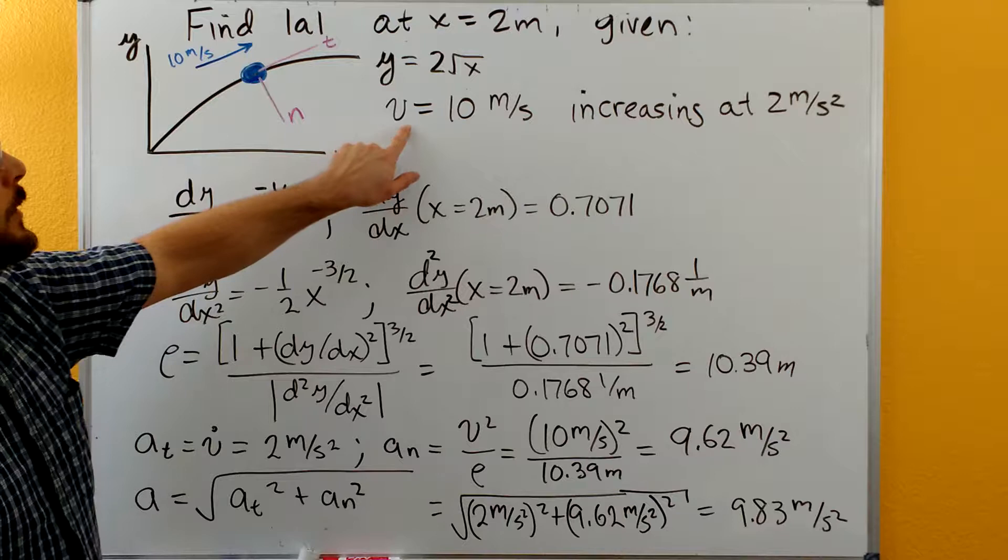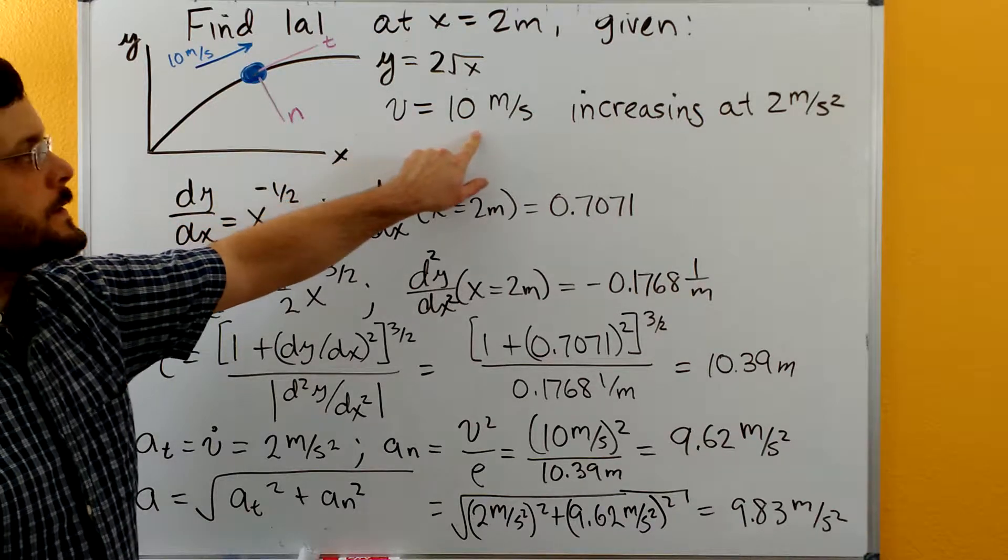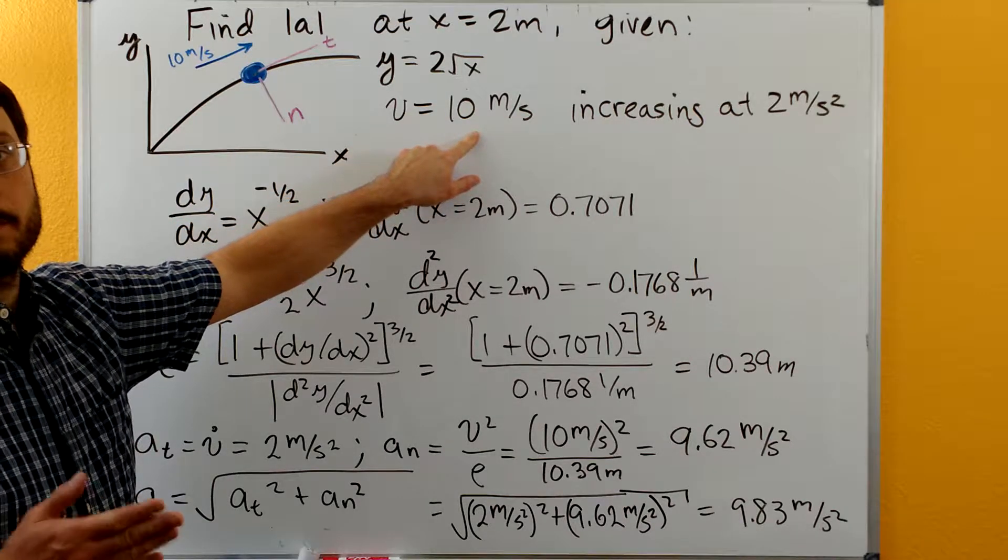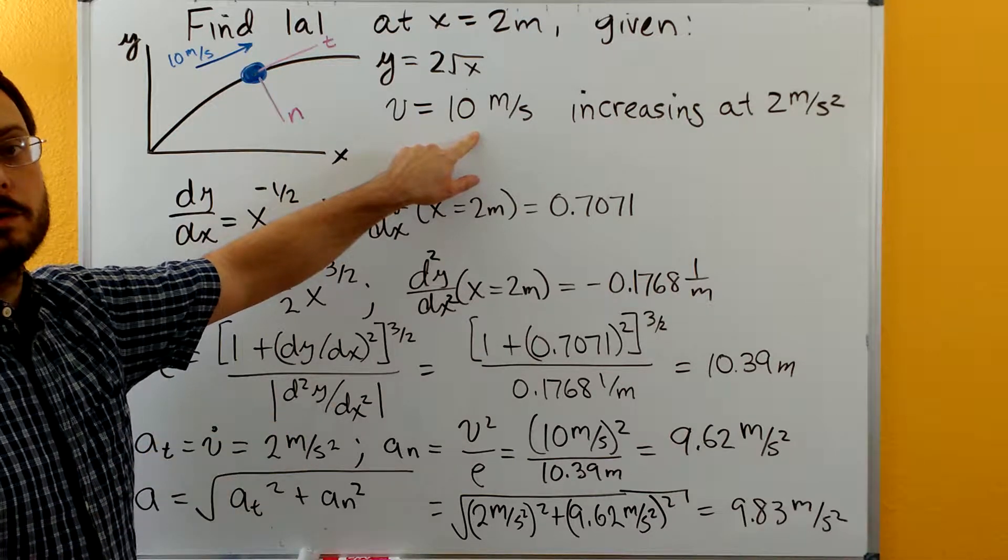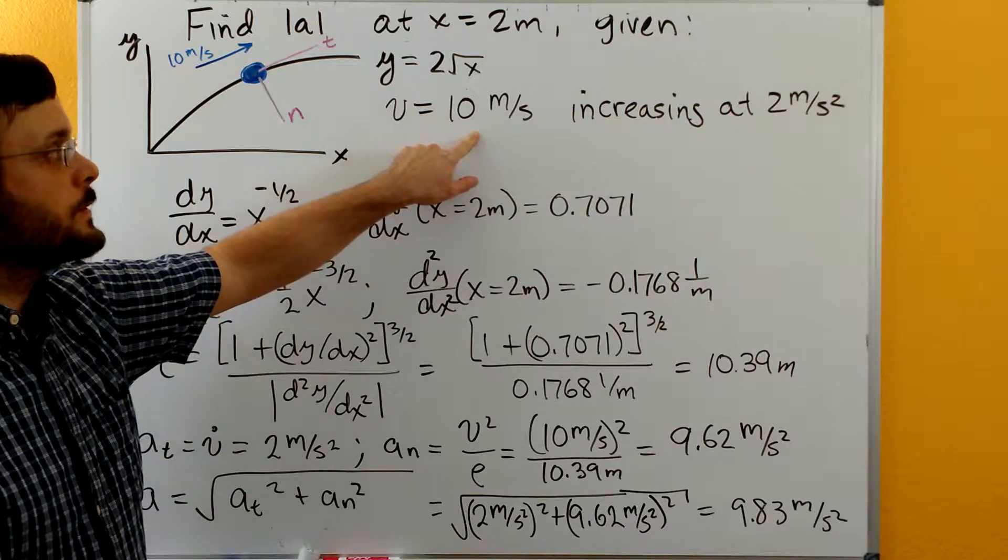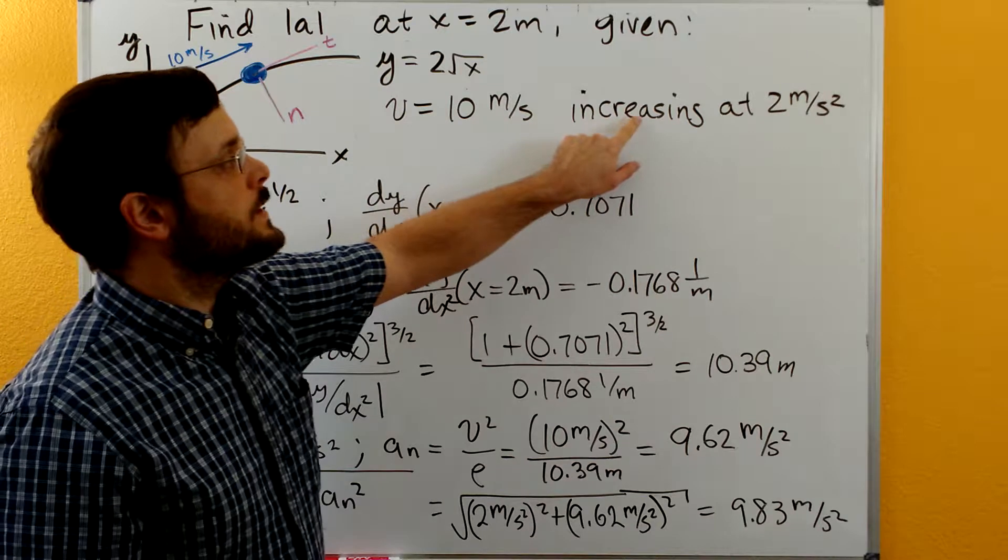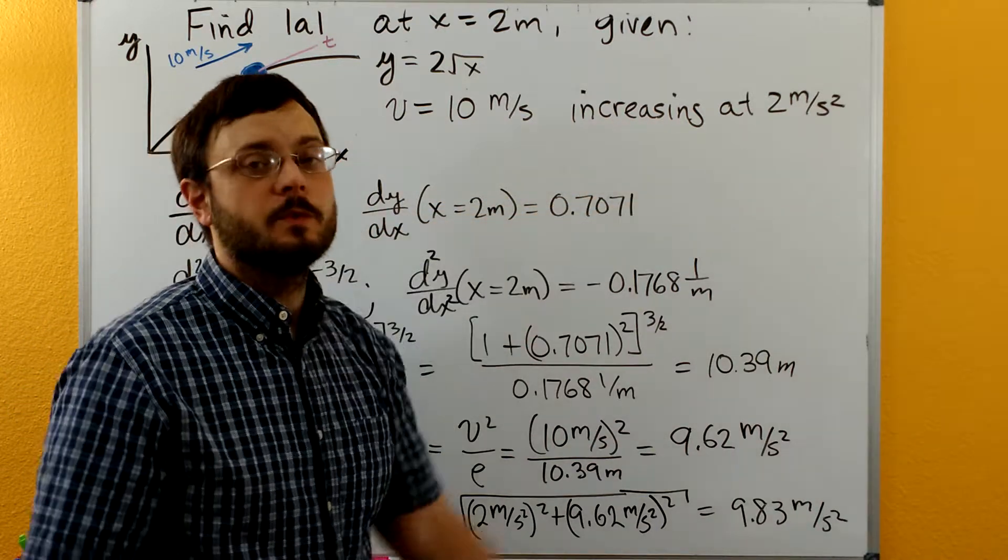So in this problem, we know that the velocity is 10 meters per second, and this is the total speed. This is not just the x or the y component, but the total speed, and that the speed is increasing at a rate of two meters per second squared.